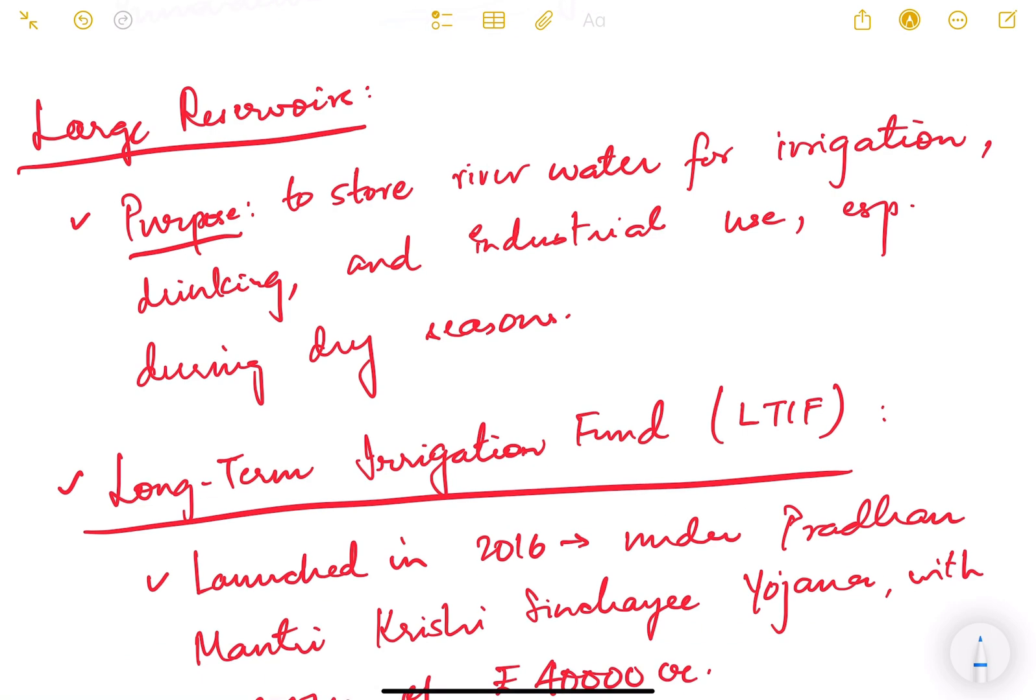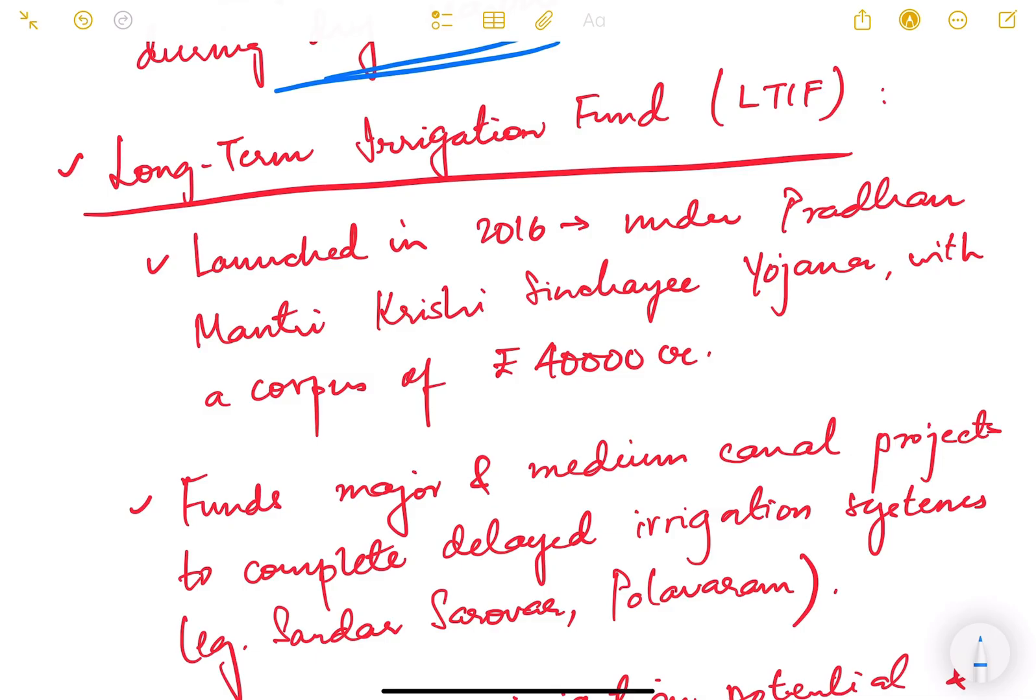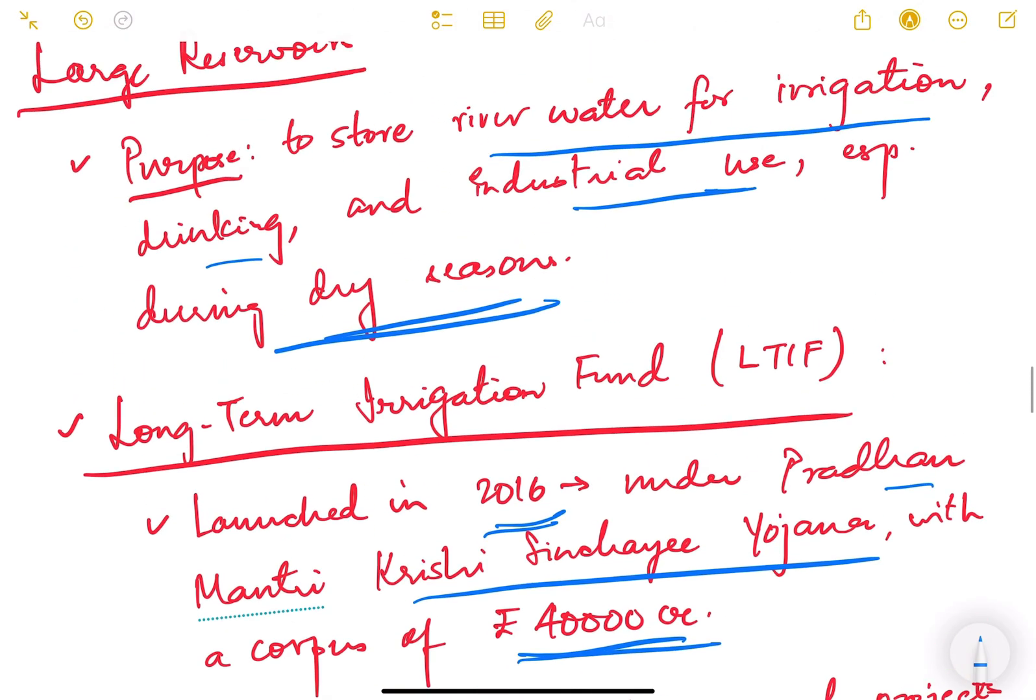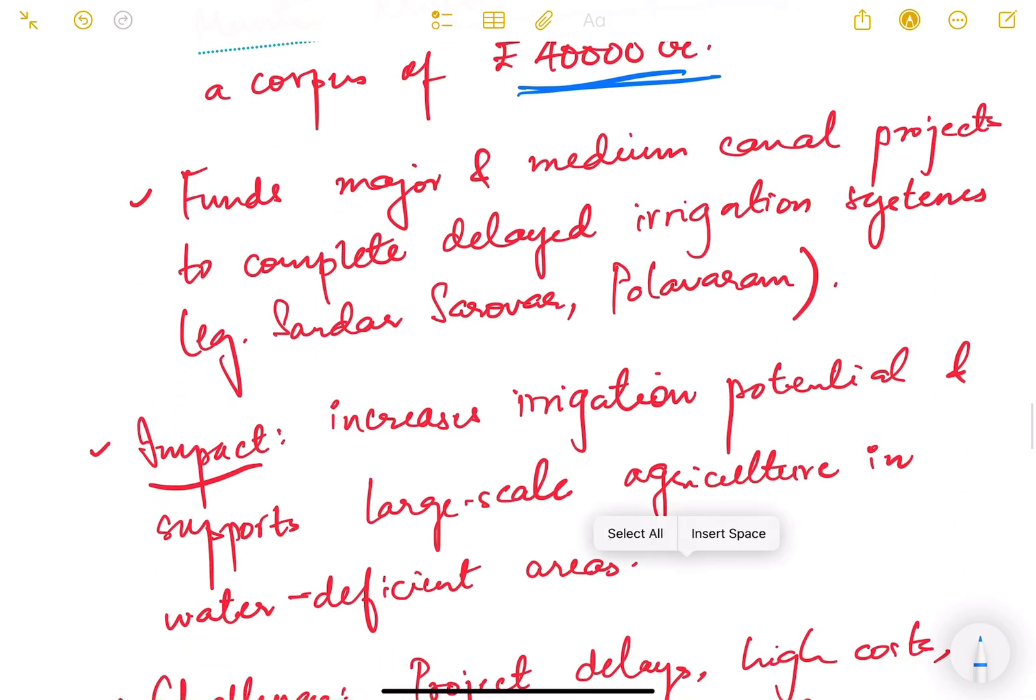Large reservoirs: the purpose is to store river water for irrigation, drinking, and industrial use, especially during dry seasons. Long-term irrigation fund has been established in 2016 under Pradhan Mantri Krishi Sinchayee Yojana with a corpus of 40,000 crore. This fund is established to have such large reservoirs being constructed.